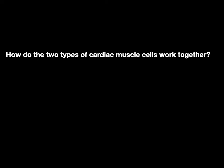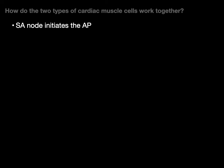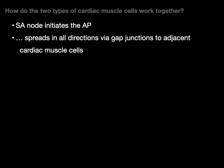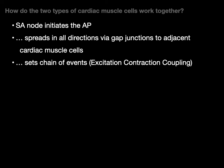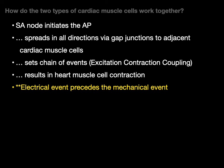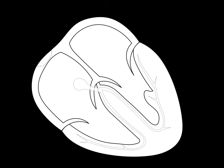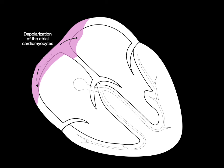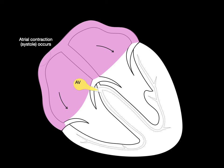How do the two types of cardiac muscle cells work together? The SA node initiates the action potential, which spreads in all directions via gap junctions to adjacent cardiac muscle cells, setting off a chain of events called excitation-contraction coupling, which results in heart muscle cell contraction. The electrical event — the action potential — precedes the mechanical event, contraction. The SA node generates the action potential that results in sinus rhythm, and the depolarization wave spreads through the gap junctions of the atrial cardiomyocytes until the atria is completely depolarized and atrial contraction occurs.